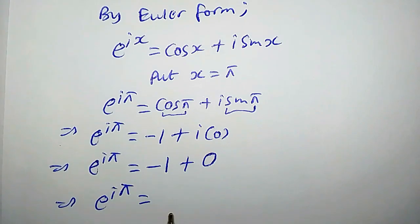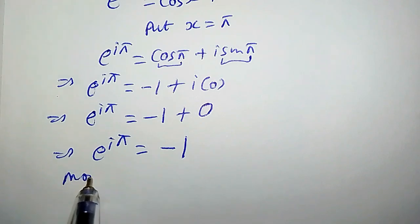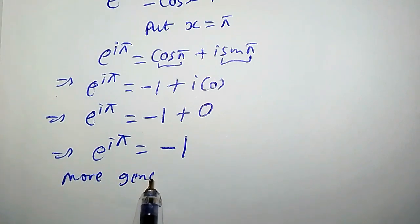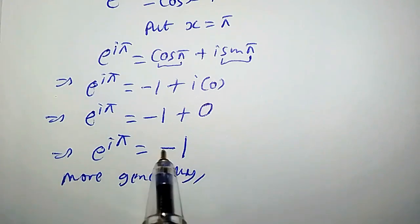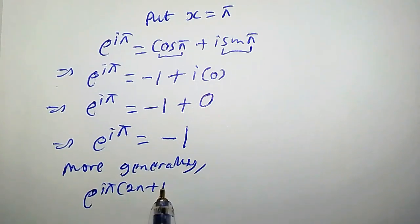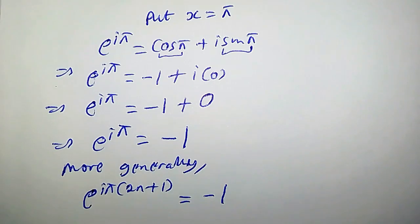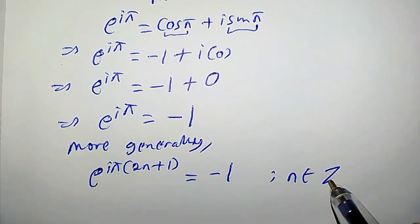More generally, we can rewrite this as e^(iπ(2n+1)) = −1, such that n belongs to the set of integers.